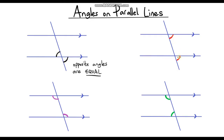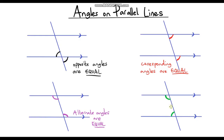These two angles in red are also equal and they are known as corresponding angles. The two purple angles are on alternate sides of this line, which is also known as a transversal, so these are known as alternate angles and they are both equal. Finally, the two green angles are not equal to one another but they sum to 180 degrees and are known as co-interior angles.